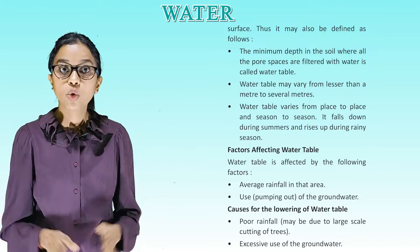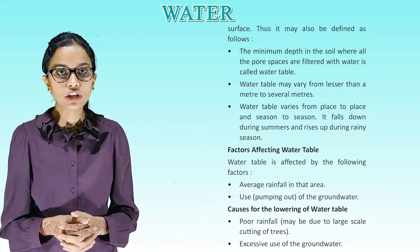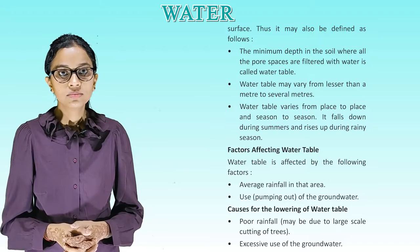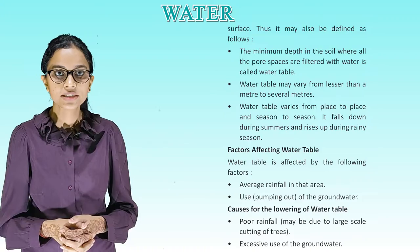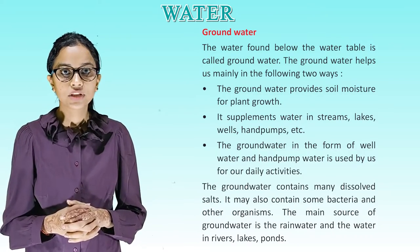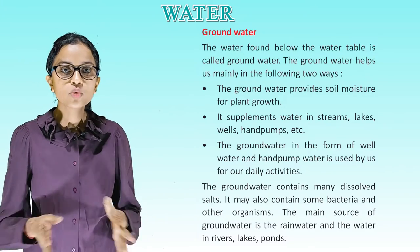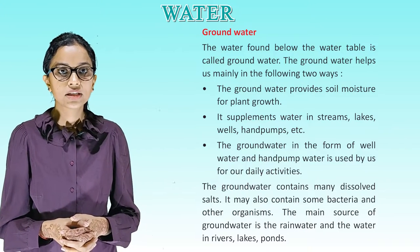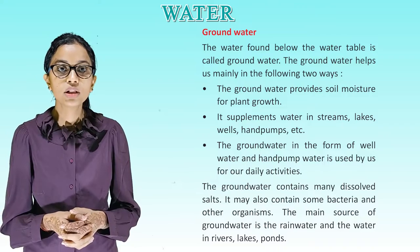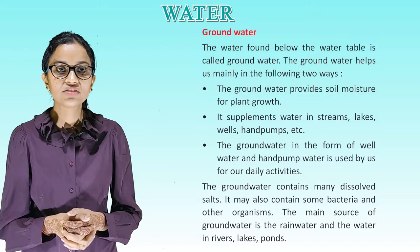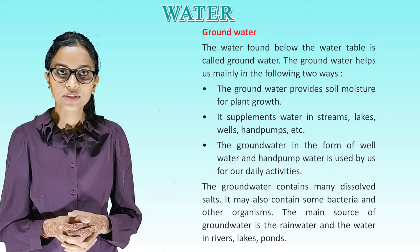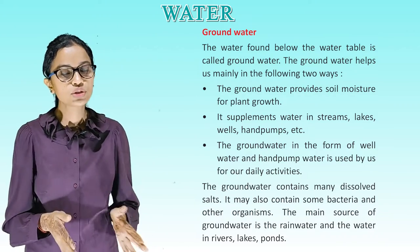Factors affecting water table. The water table is affected by the following factors: average rainfall in that area, and the pumping out of groundwater. Causes for the lowering of water table include poor rainfall, possibly due to large-scale cutting of trees, and excessive use of groundwater. Ground water. The water found below the water table is called groundwater. Groundwater helps us mainly in two ways: it provides soil moisture for plant growth, and it supplements water in streams, lakes, wells, hand pumps etc. Groundwater in the form of well water and hand pump water is used by us for our daily activities. Groundwater contains many dissolved salts and may also contain some bacteria and other organisms. The main source of groundwater is rainwater and the water in rivers, lakes and ponds.